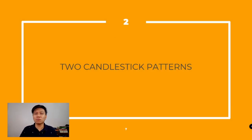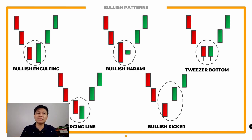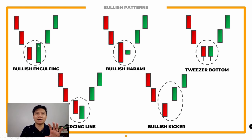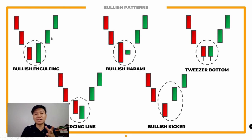Let's go through the two-candlestick patterns. Meron tayong limang common patterns dito. First is yung bullish engulfing — yung candle from the previous day, kapag naka-downtrend ka, kakainin siya ng buo ng next candle. Sobrang laki nung green candlestick — ini-engulf niya yung buo. Meaning this is a very strong confirmation na magbubullish na yung trend. But you still need to wait for the next candlestick to confirm.